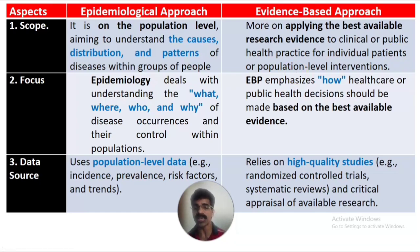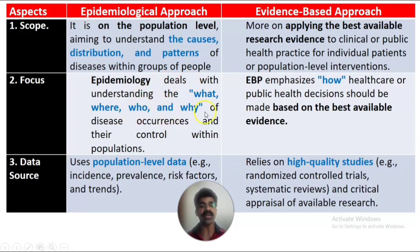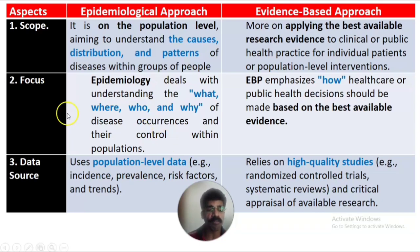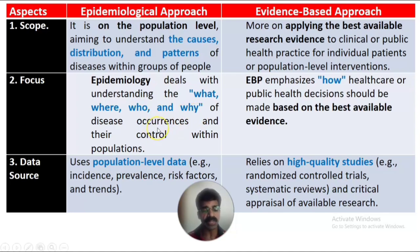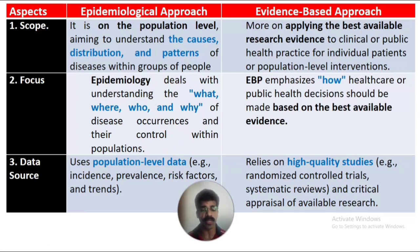The second aspect is focus. The focus of epidemiology deals with understanding the what, where, who, and why of disease occurrence in a group of people or in a population, and using that knowledge to control particular problems within the community. It focuses on determining what the problem is, where it occurred, who are the people affected, and why — and controlling the disease using that collected information.